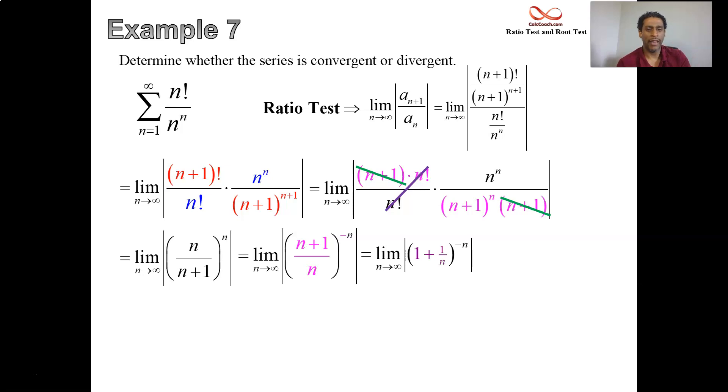We have a few classes ago shown how if you have 1 plus m over n and that's raised to the kn and you're taking the limit as n goes to infinity, that's e to the mk. This is what we're looking at. The value of m is 1. The value of k is negative 1. This limit then must be e to the 1 times negative 1 or e to the negative 1.